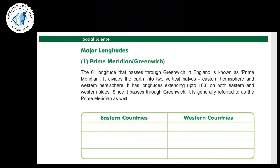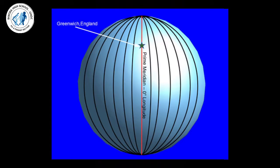Let us discuss about major longitudes. It is given on page number 24. The first major longitude is the prime meridian, which is at Greenwich. The zero degree longitude that passes through Greenwich in England is known as the prime meridian.